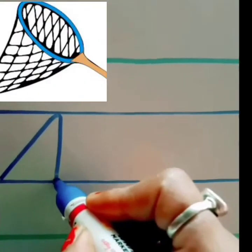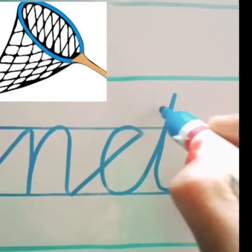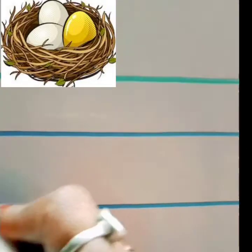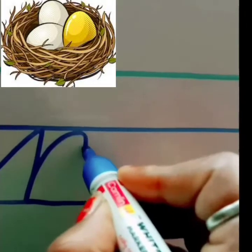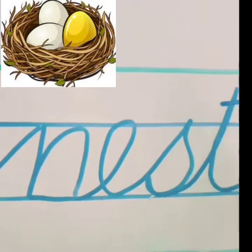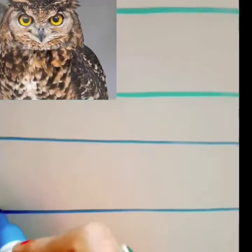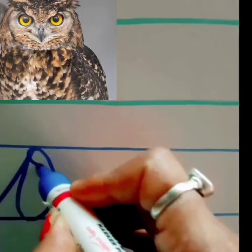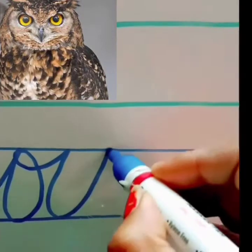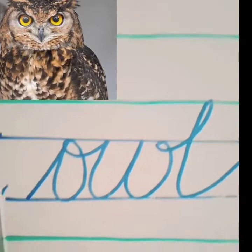N for net. N, E, T, net. N for also nest. N, E, S, T, nest. O for owl. O, W, L.